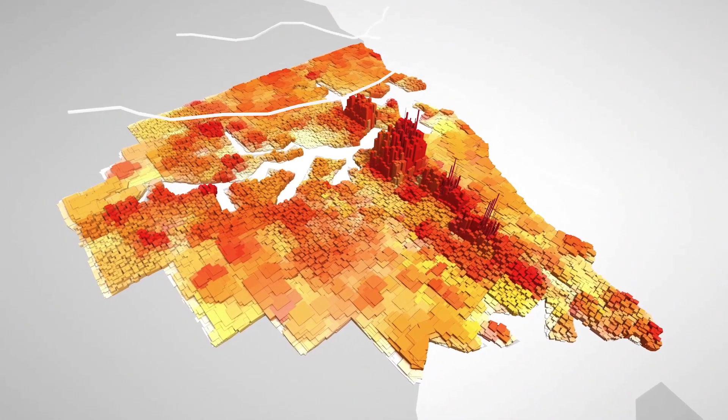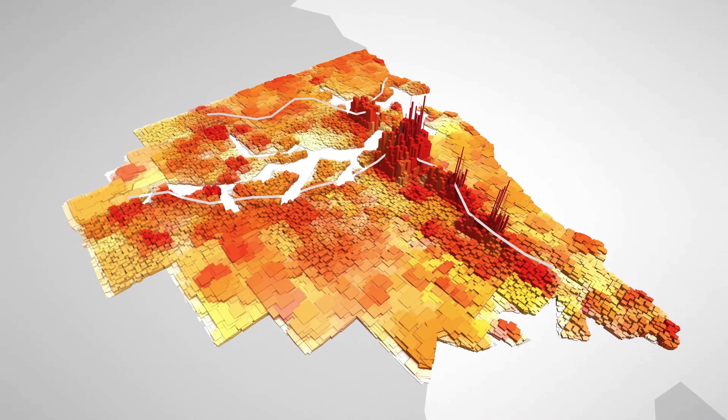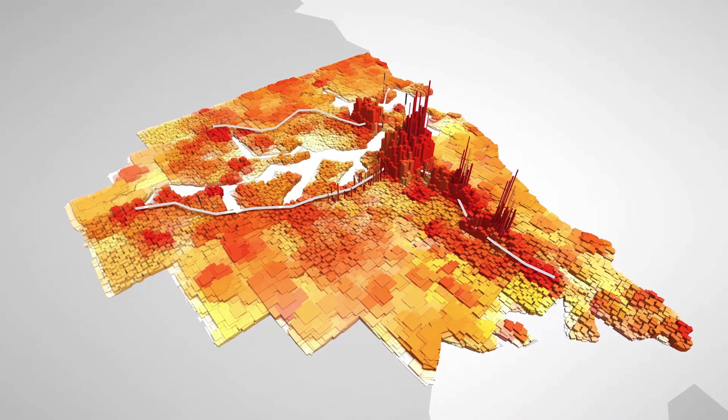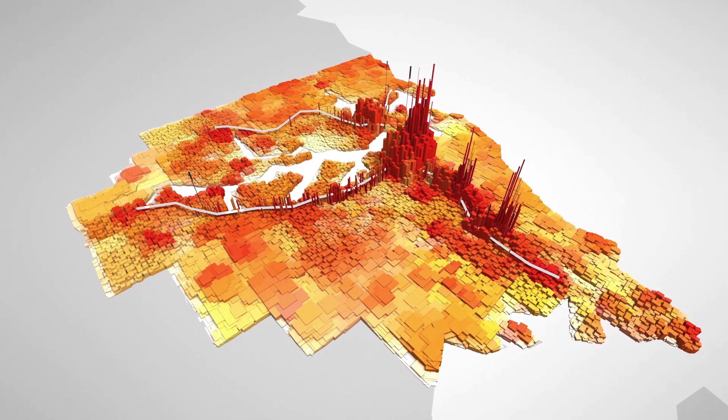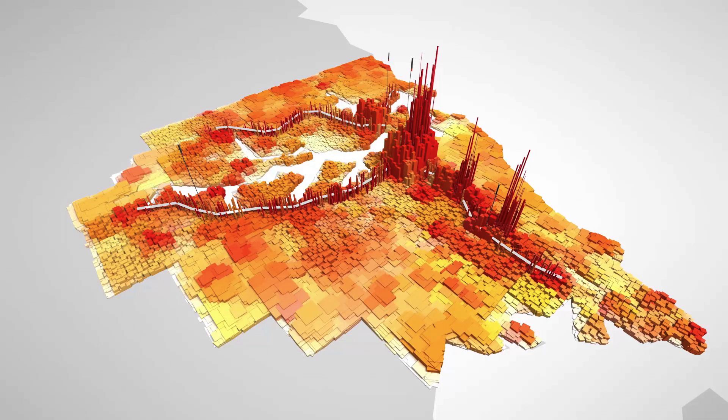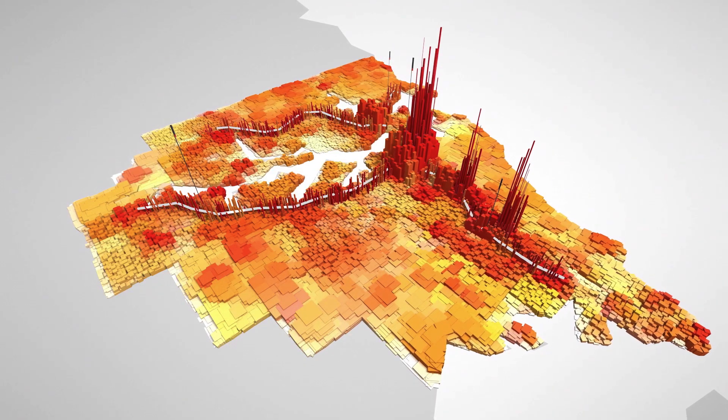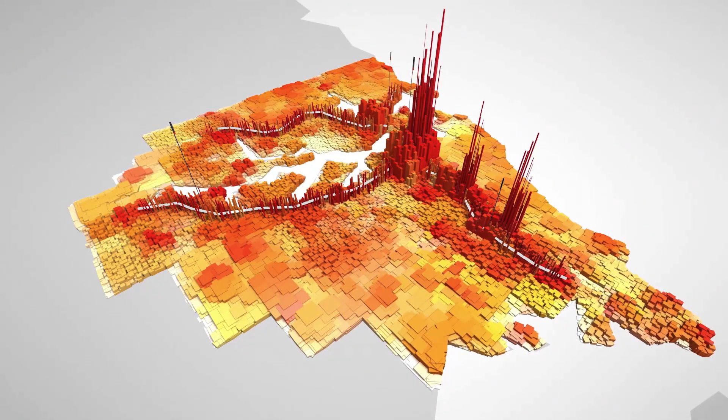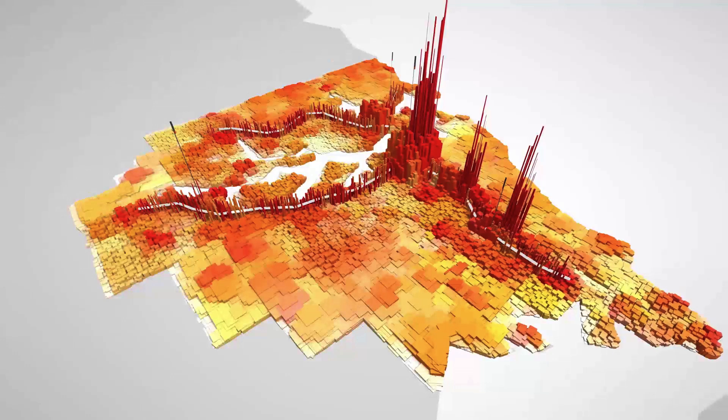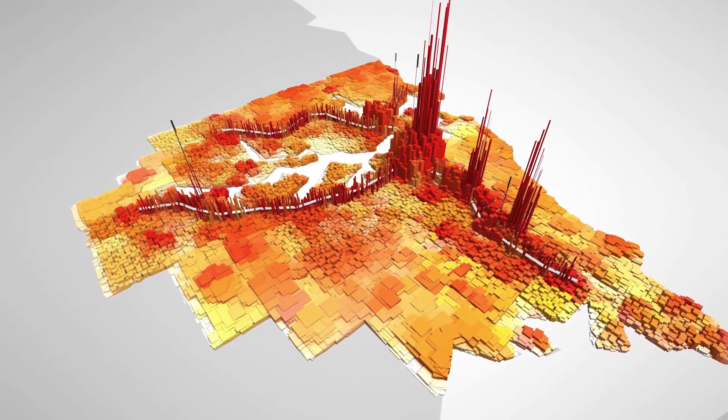we layer in our transport infrastructure data and see economic activity rippling back from the CBD along these key road and public transport arteries. Colours represent the economic output and the height of the bar is not a building but rather the density or concentration of output.